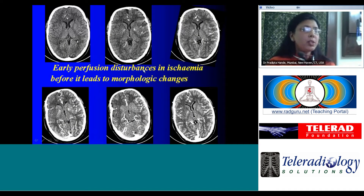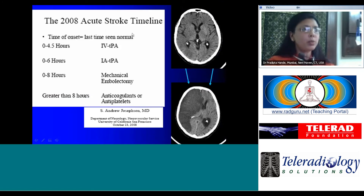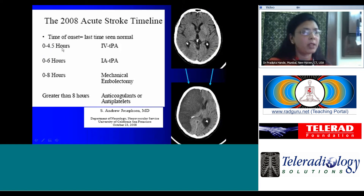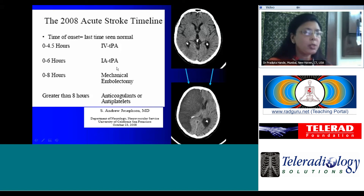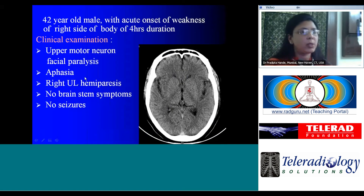Early perfusion disturbances — if we pick them up — allow us to diagnose stroke before the morphologic changes occur due to ischemia. As for the acute stroke timeline, the golden period used to be 0 to 3 hours. From 2008 and beyond, we have been able to stretch it to 4.5 hours for IV thrombolysis, and mechanical embolectomy can be performed up to 8 hours. Our goal is to use CT perfusion or diffusion MRI with mismatch to pick up stroke and ischemic tissues much earlier. It's a good practice.